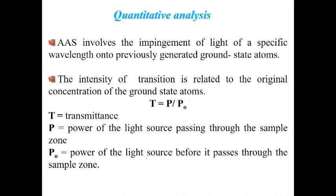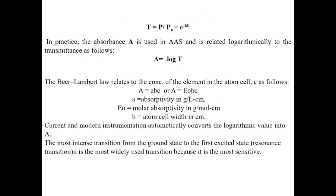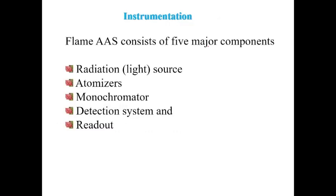AAS involves the impingement of light of a specific wavelength onto previously generated ground-state atoms. The intensity of the transition is related to the original concentration of ground atoms. This follows Beer-Lambert law: T = P/P₀, A = εbc, and A = −log(T). Greater concentration of atoms means greater absorption and lesser transmittance. This has already been covered in the spectroscopy chapter.